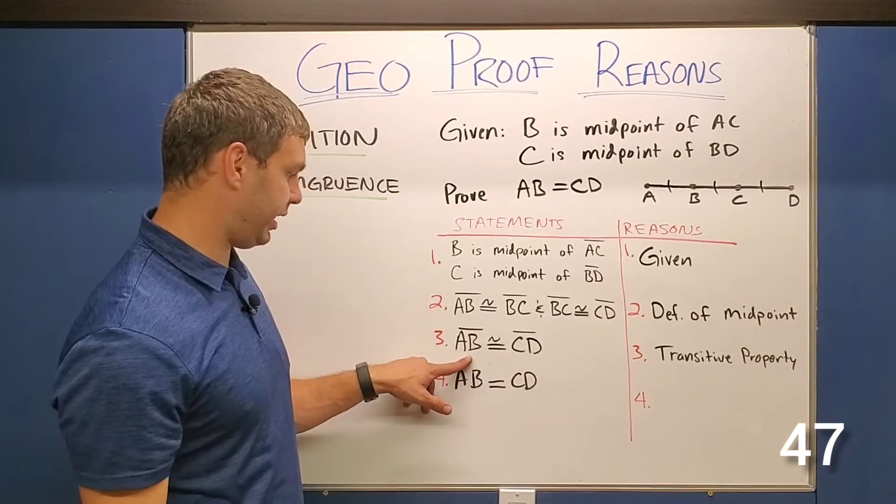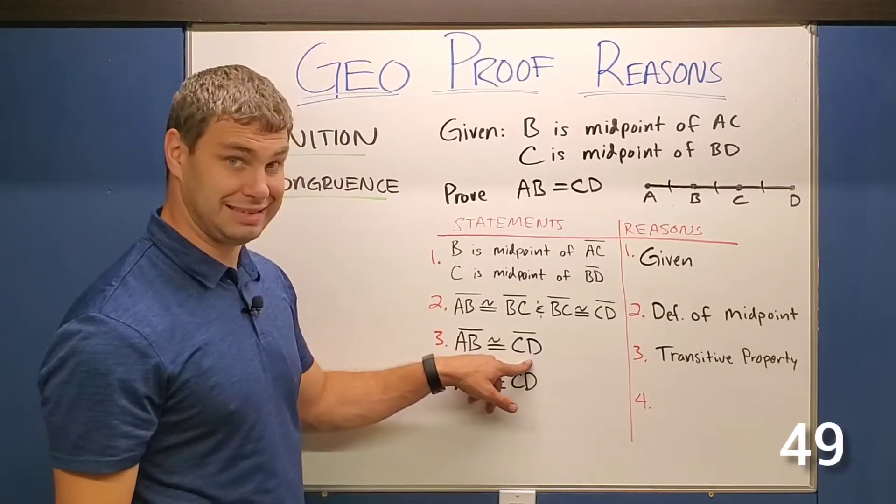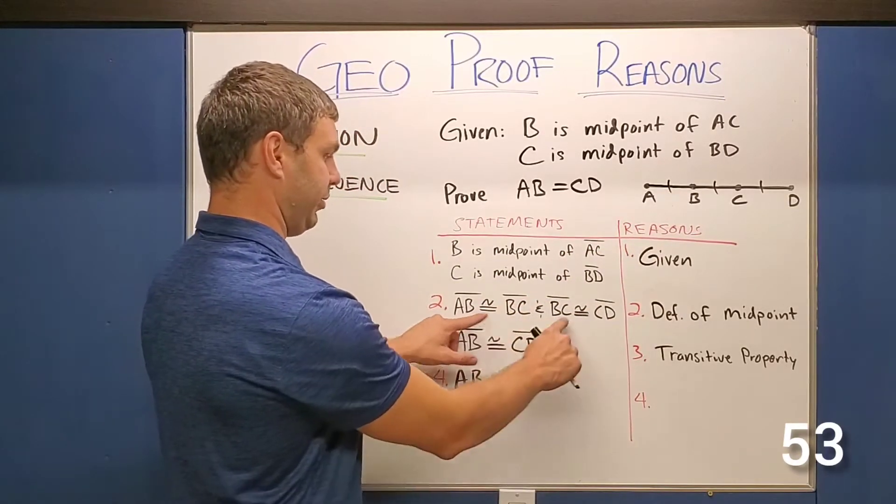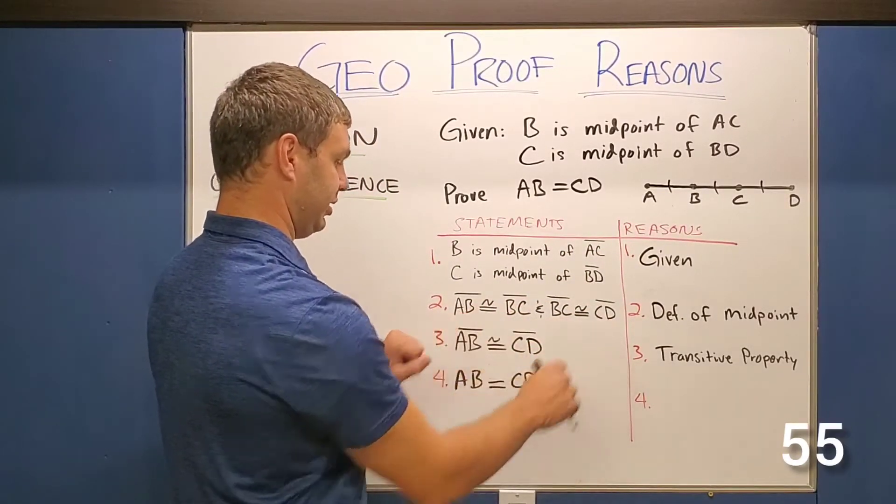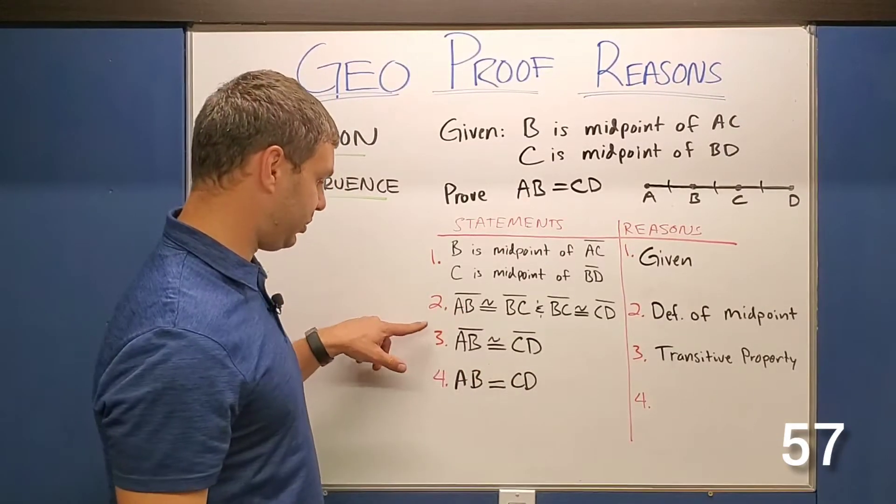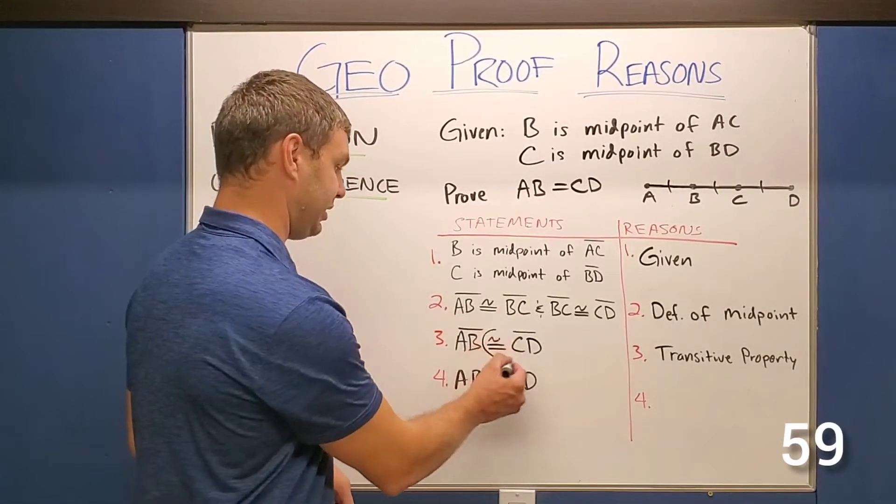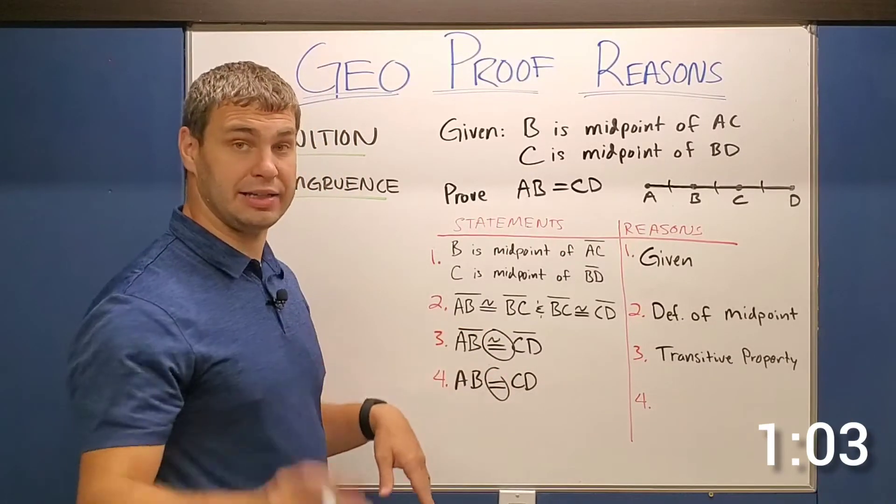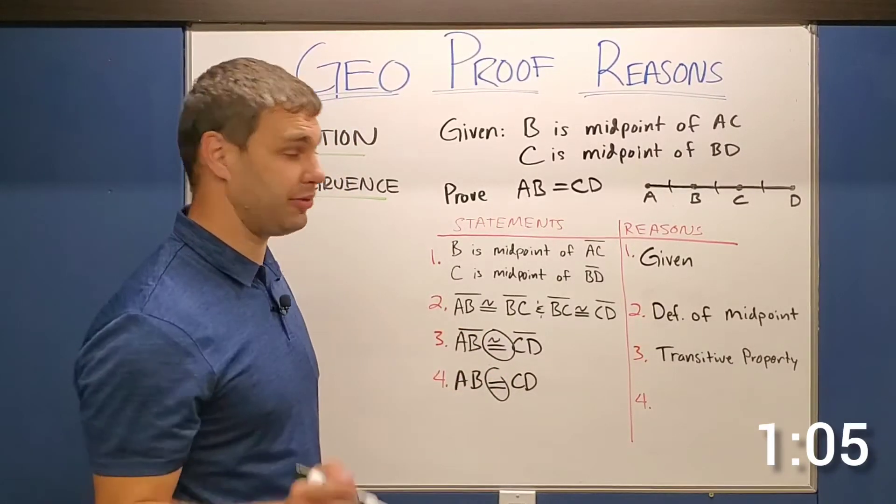Because they're all congruent to each other, I can say AB is congruent to CD based off the picture, but more importantly because of transitive property, we cut out our middleman, AB is congruent to CD. Then the one we're interested in is the difference between three and four is actually the sign. When one sign is congruent and one is equal, that is automatically definition of congruence.